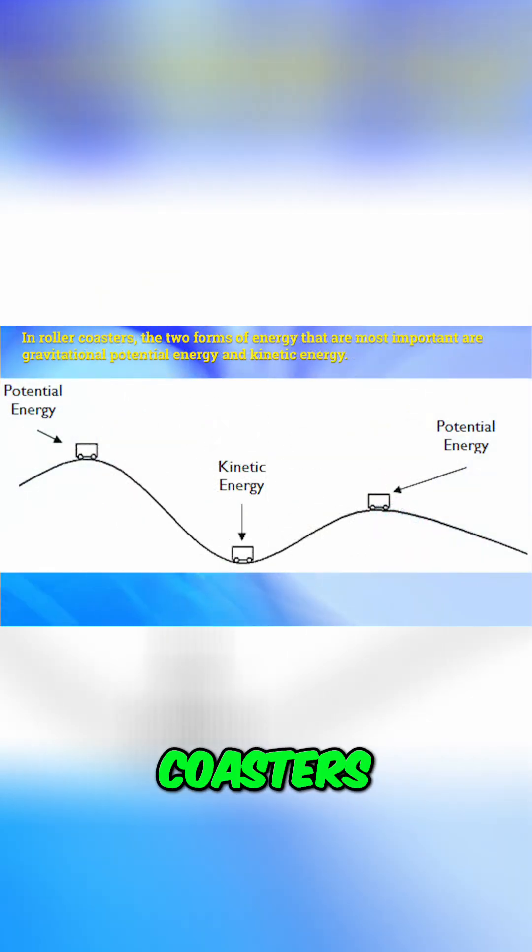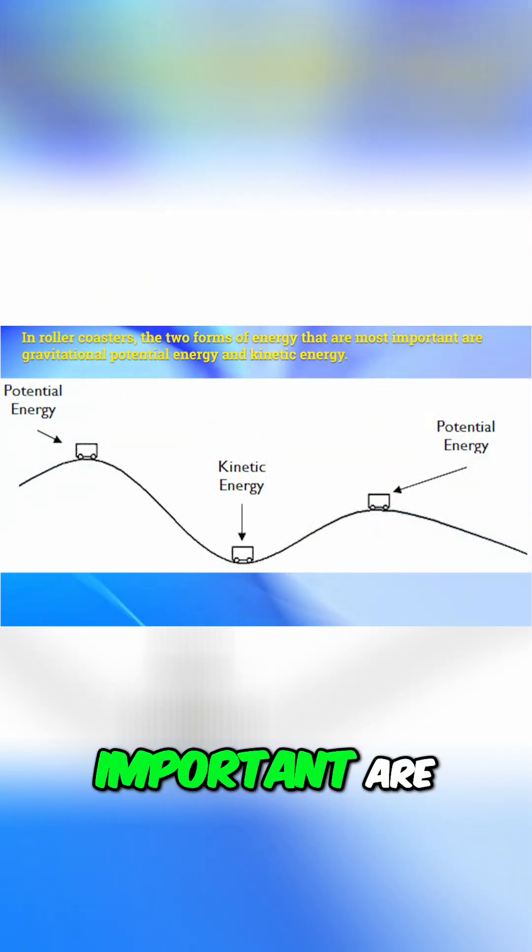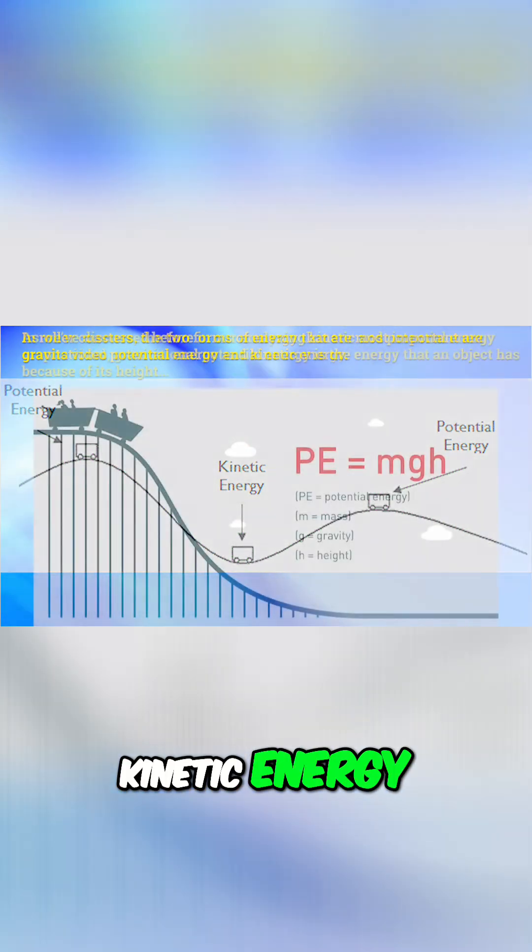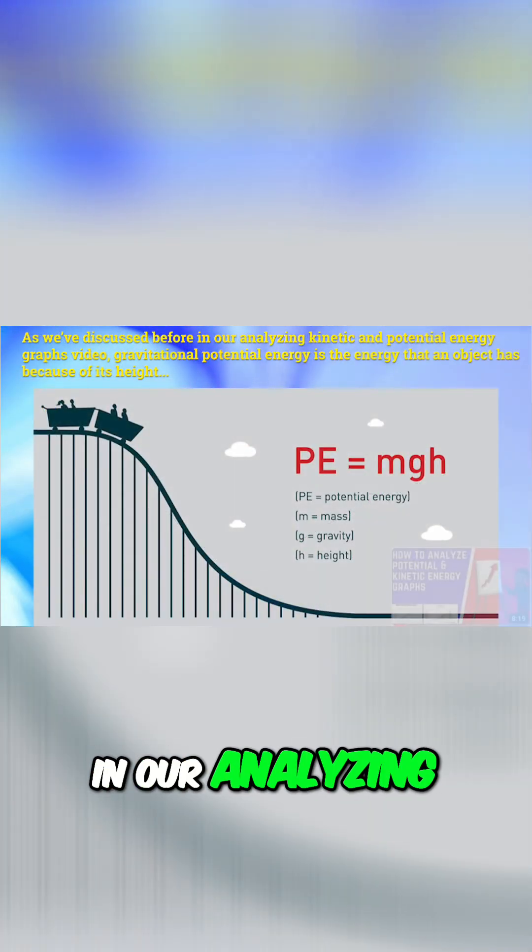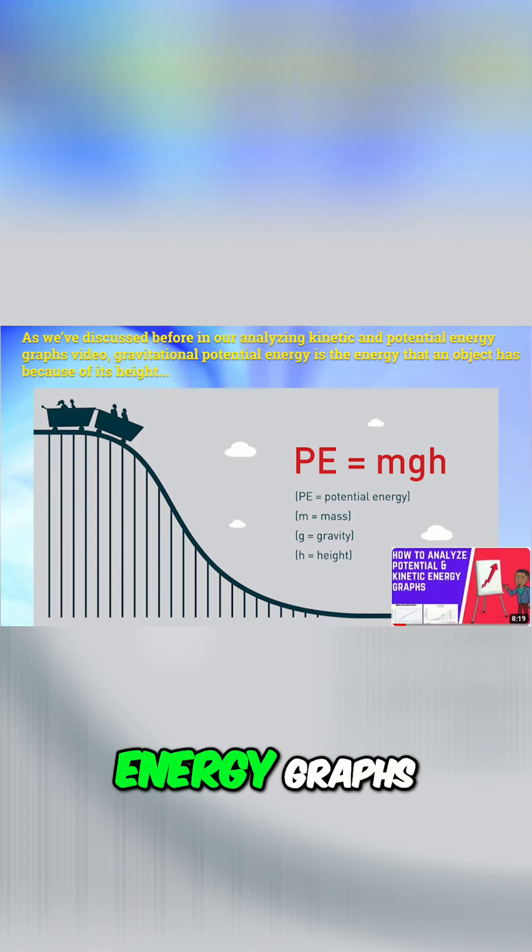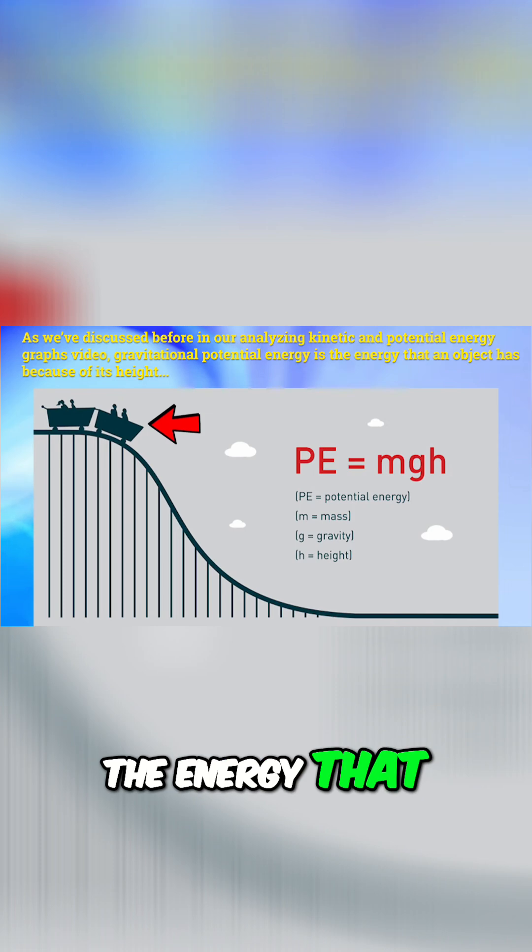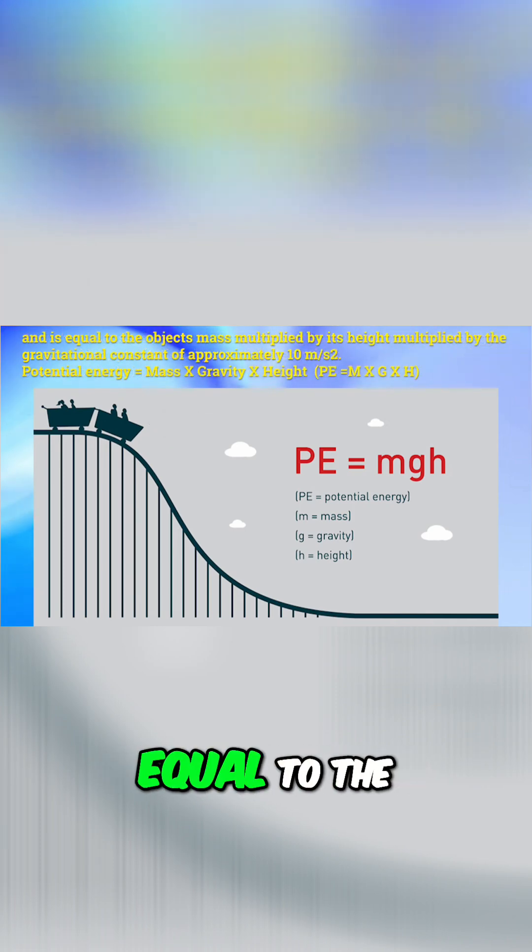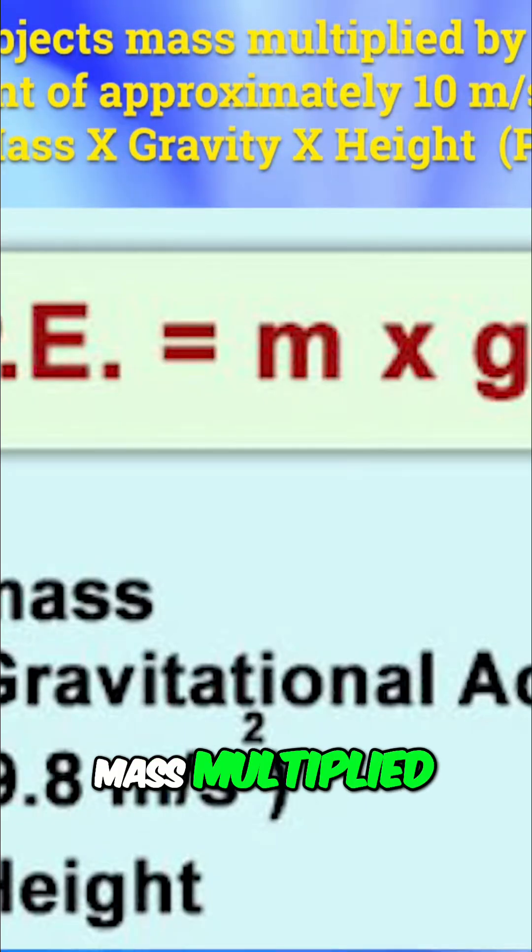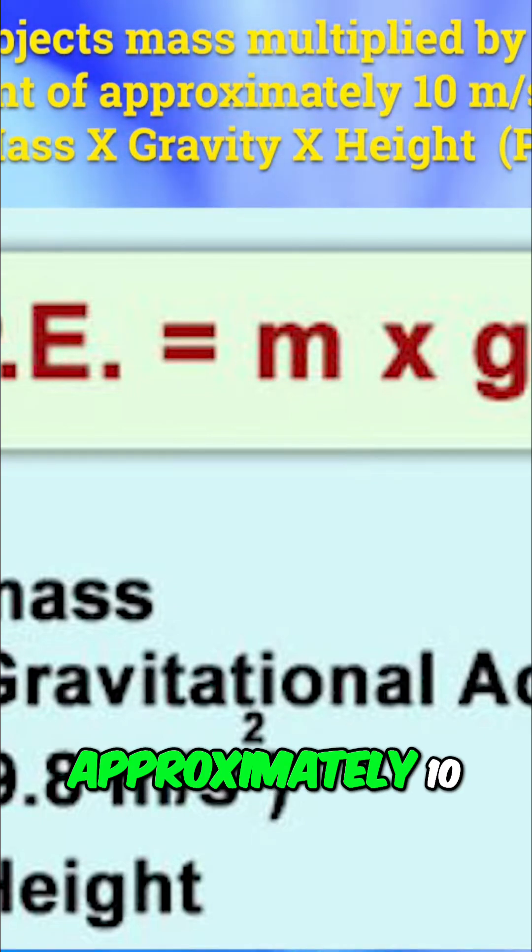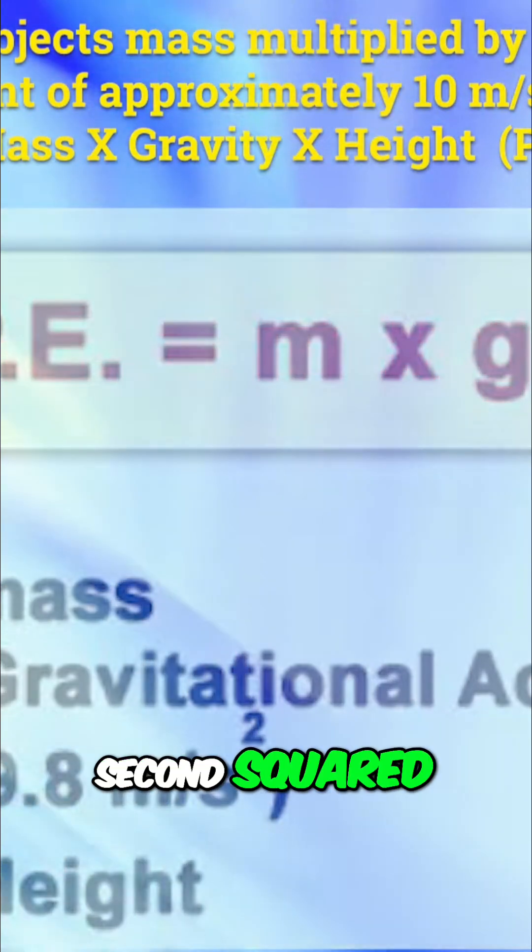In roller coasters, the two forms of energy that are most important are gravitational potential energy and kinetic energy. As we've discussed before in our analyzing kinetic and potential energy graphs video, gravitational potential energy is the energy that an object has because of its height and is equal to the object's mass multiplied by its height multiplied by its gravitational constant of approximately 10 meters per second squared.